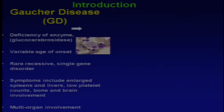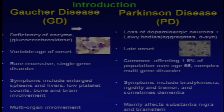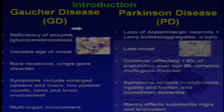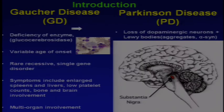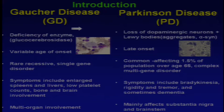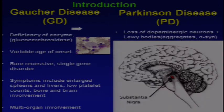Today I want to introduce the two disorders I'm going to speak about. The first is Gaucher disease, a rare autosomal recessive enzyme deficiency with variable age of onset and multi-organ involvement. On the other hand, Parkinson disease is a common disorder affecting about 1.5% of the population over 65. It's a complex multi-gene disorder with late onset, featuring loss of dopaminergic neurons and formation of Lewy bodies — aggregates seen on autopsy in the brain — mainly affecting the substantia nigra and brainstem.